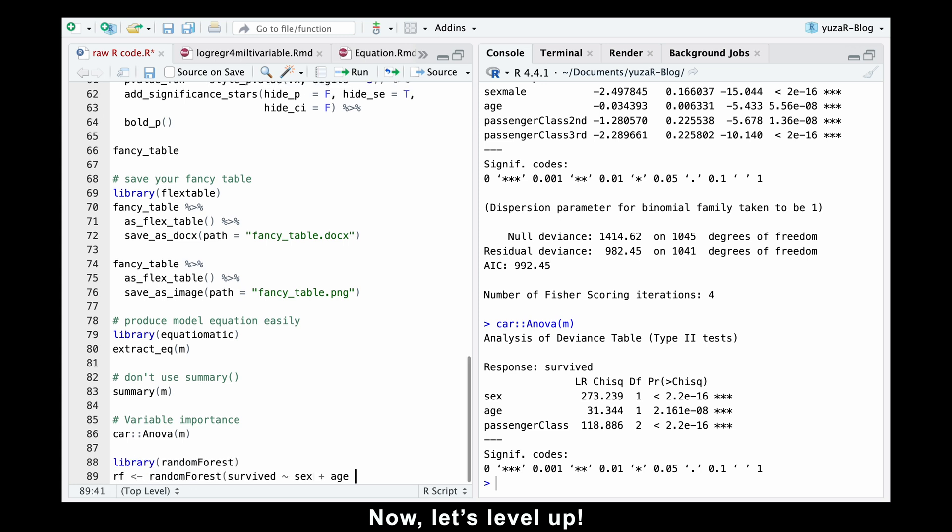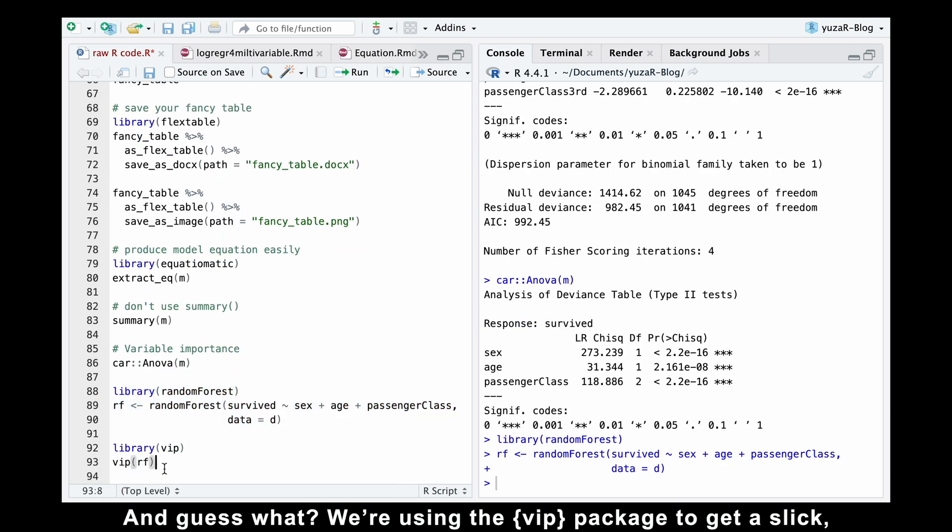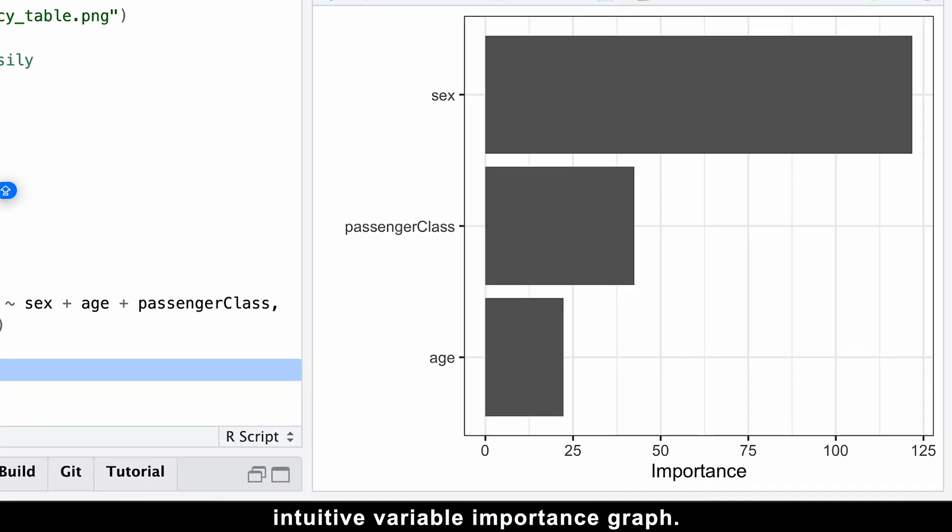Now, let's level up. We can run a random forest classification algorithm. And guess what? We're using the vip package to get a slick, intuitive variable importance graph. Same results, but way cooler presentation.